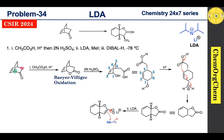After generation of the enolate ion, it reacts with methyl iodide: the electrons shift, attacking the methyl group, and iodide is kicked off to produce the corresponding alkylated or methylated intermediate. Regarding stereochemistry — since the bottom face is highly sterically crowded compared to the top face, which is only occupied by two hydrogen atoms, methylation takes place from the top face to produce the corresponding intermediate.